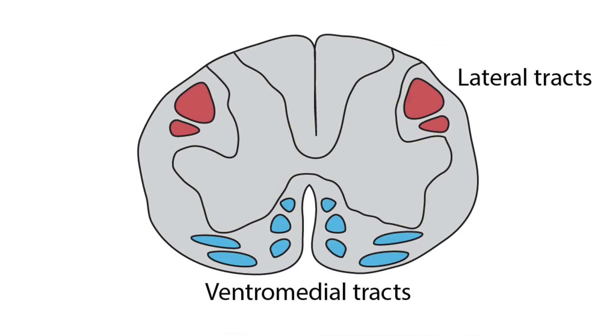There are multiple descending tracts within the spinal cord that send information from the brain to the motor neurons in the ventral horn. The lateral tracts are responsible for carrying information about voluntary movement of the arms and legs. The ventromedial pathways are responsible for carrying information about posture and balance.